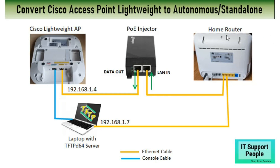In this video I have used a home router — you can see the yellow ports are the LAN ports and the home router is DHCP enabled. One LAN connection goes to the POE injector, and the data out goes to the Ethernet port of the lightweight access point. The other LAN connection goes to the laptop. Both connections are on the same DHCP, so the IP of the lightweight access point is 192.168.1.4 and the laptop is 192.168.1.7 — fulfilling the condition. There is also a console cable connection.